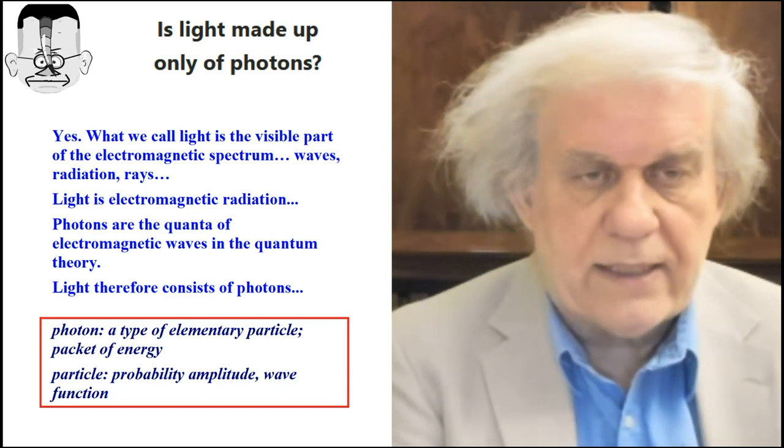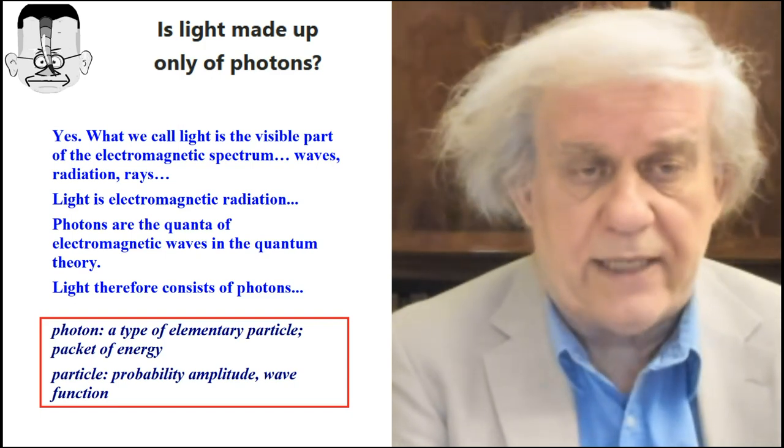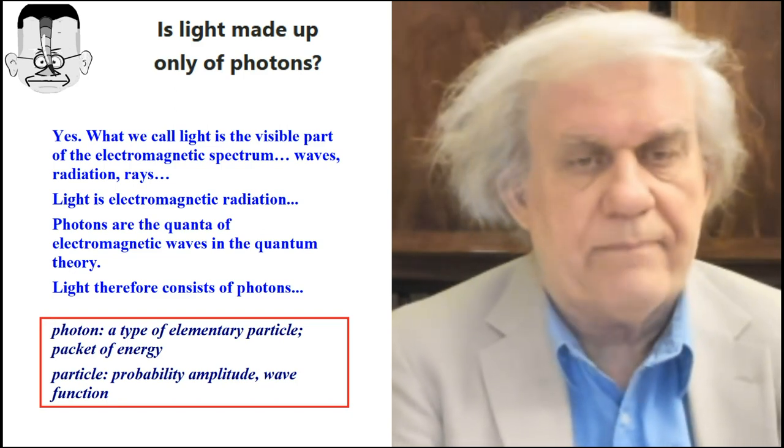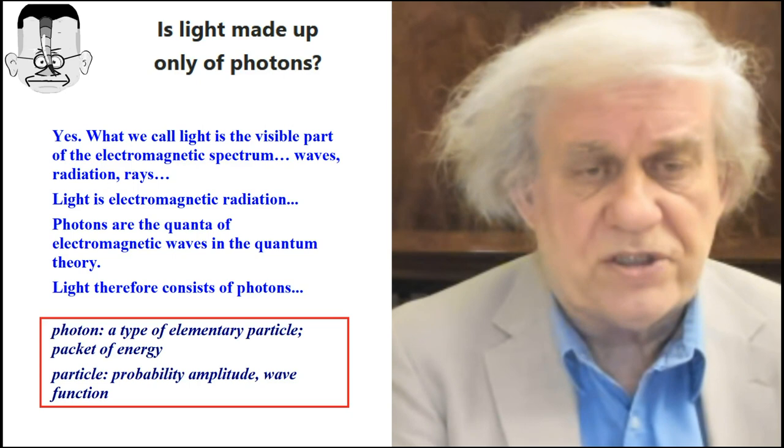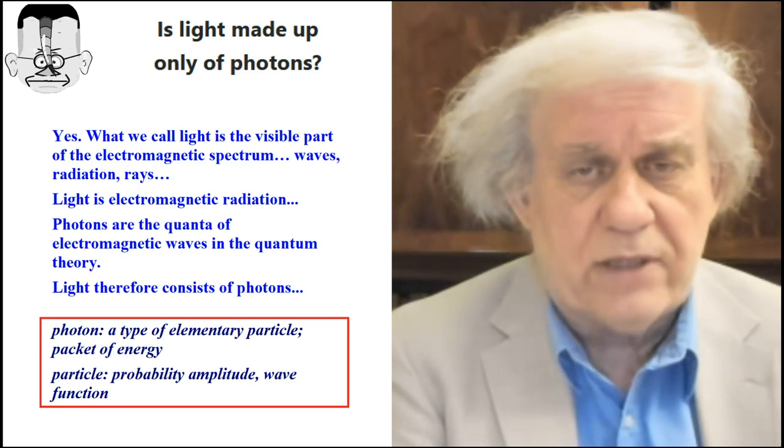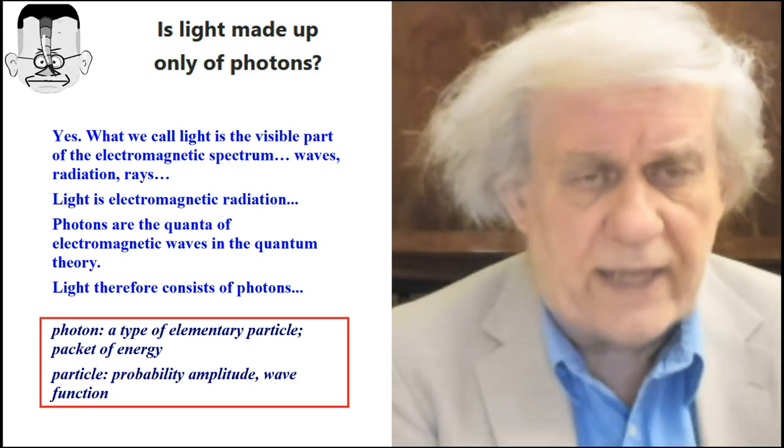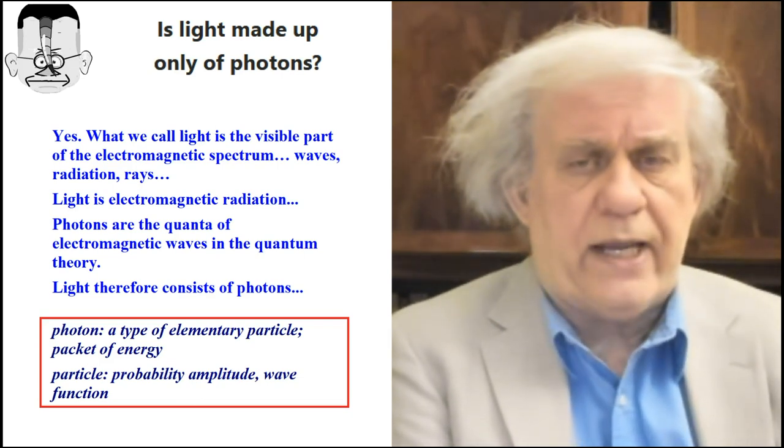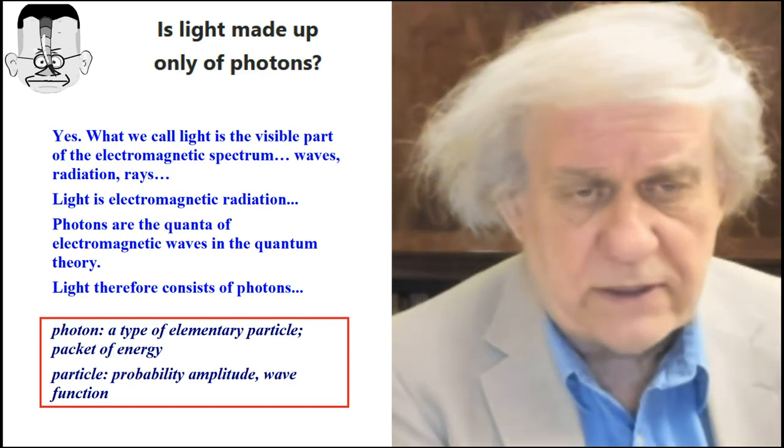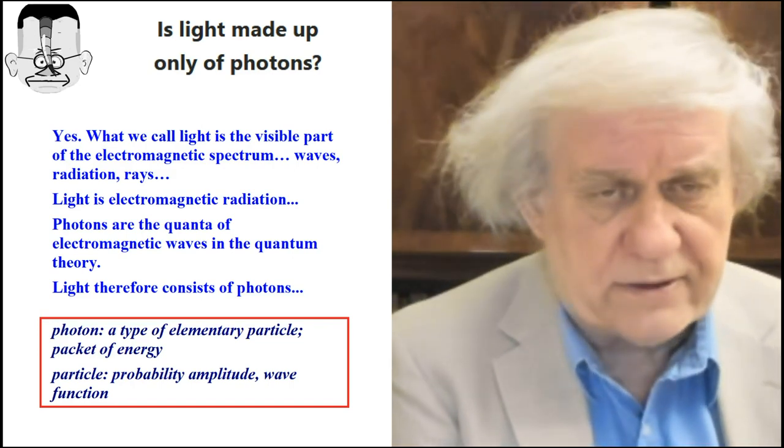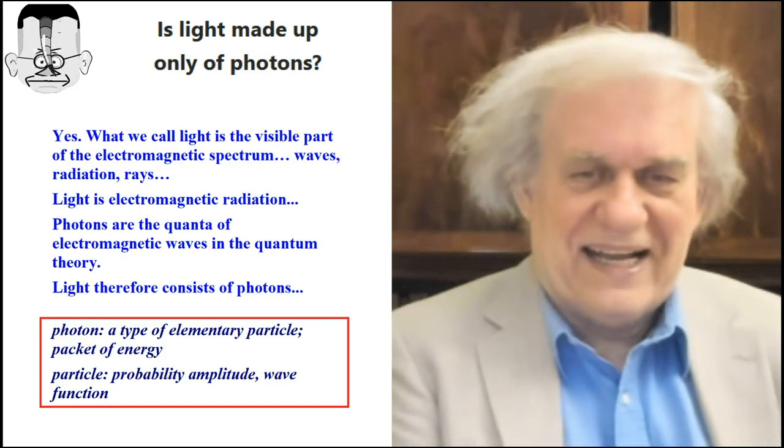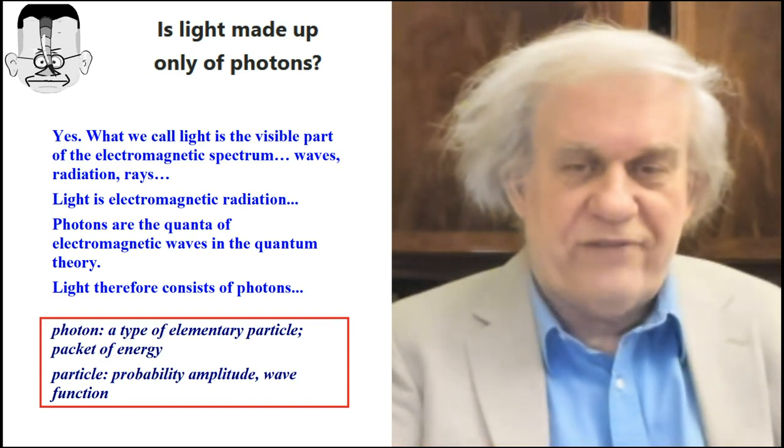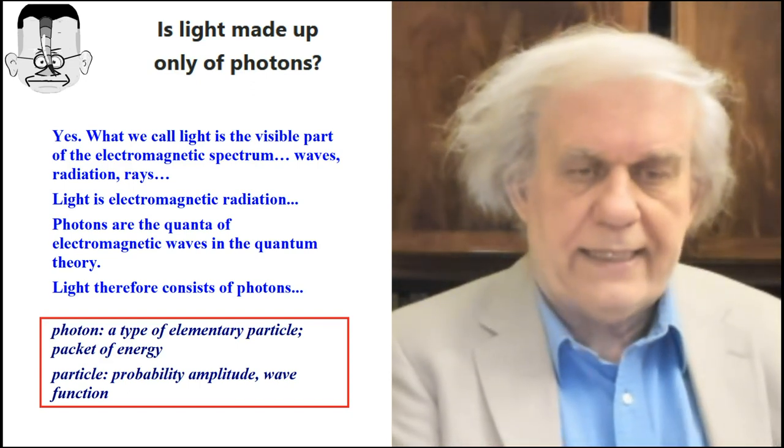He can't tell me what light is. He said light is electromagnetic radiation. Again, no such thing as radiation. Photons are the quantum of electromagnetic waves in the quantum theory. Light, therefore, consists of photons. You go down the rabbit hole and you look for the photon. The photon says a type of elementary particle, packet of energy. You go deeper and it says particle, probability amplitude, wave function. When you get down to the end, when you keep peeling, you find nothing there.